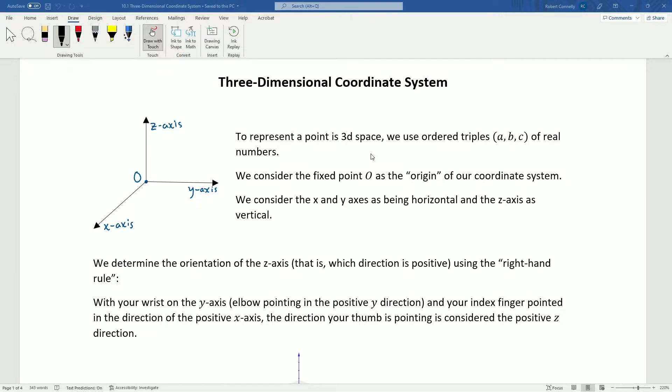So the way we define 3D space or the way we express 3D space is with ordered triples, so similar to our 2D space, here we just have three dimensions, A, B, and C, of real numbers, and we consider the fixed point O as the origin of our coordinate system, so that's the point 0, 0, 0. We consider the X and Y axes as being horizontal and the Z axis is vertical.